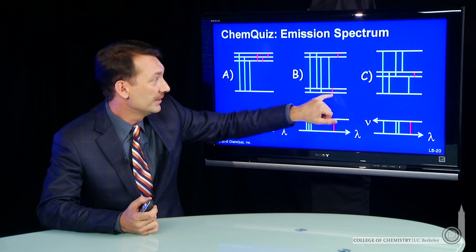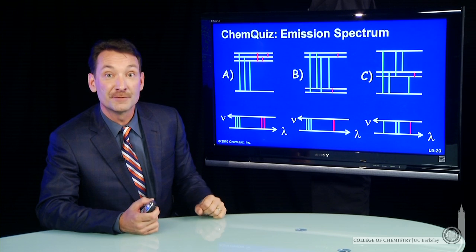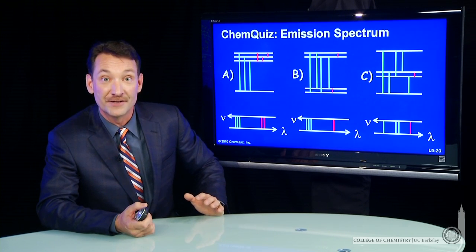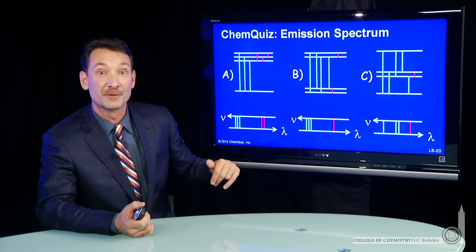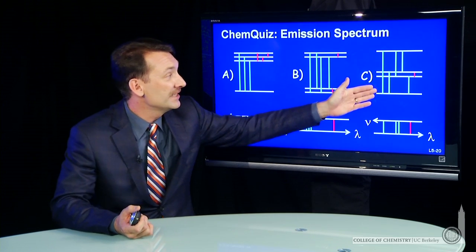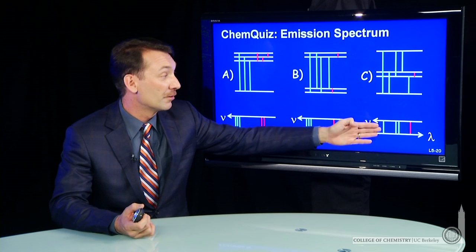And then two tiny low energy transitions, but again, they are of equal energy. So that would give you one line. That looks like the spectrum we've seen. And if you look at C, that, of course, isn't anything like what we see.